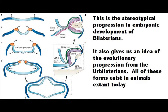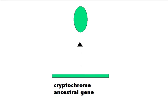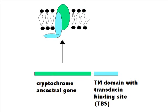I know plausible explanations have been given for the evolution of the physiology of the vertebrate eye, but I wish to advance a theory on the genomic evolution of that eye. One plausible scenario is that in the genome of an early heterotrophic eukaryote, a cryptochrome became fused with a transmembrane domain containing a transducin binding site.